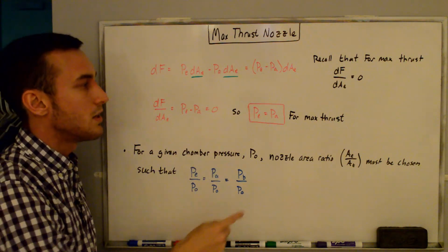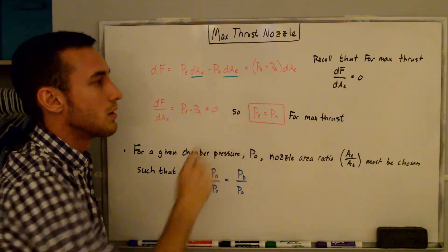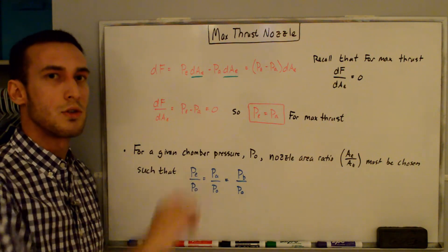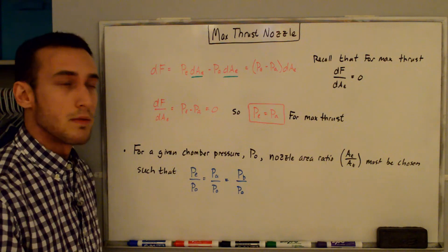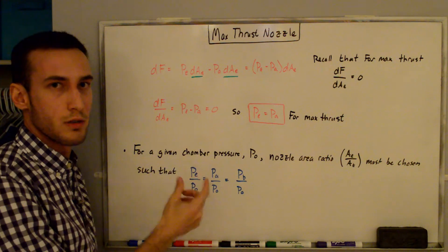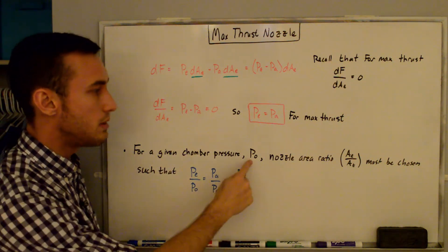So for max thrust, we get the condition that the exit pressure is equal to the atmospheric pressure, which means the nozzle perfectly expands out the gases to the atmospheric pressure. So what's the implication of this solution, this pE = pA?